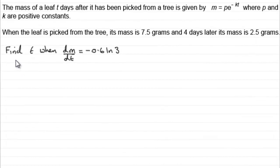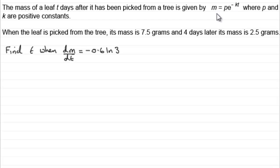For this last part, what we've got to do is find t when dm/dt equals minus 0.6 natural log 3. In order to do this, I need to update our equation m with our values of p and k that we found earlier. Then we're going to differentiate it with respect to t, equate it to this value, and solve the resulting equation for t. So let's update the equation first of all.